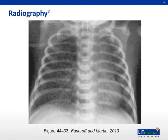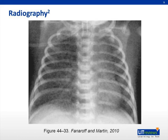In this image from Fanaroff and Martin, you can see those three classic radiographic findings for RDS. This baby has low lung volumes, a very ground glass appearance to those lung fields, and air bronchograms, which are especially clear in the left lower and the right lower lung fields. RDS is not the only disease process that can cause an x-ray to look like this, but especially in a baby of the correct gestational age giving you the right signs, it certainly should jump very high on your list and your differential.